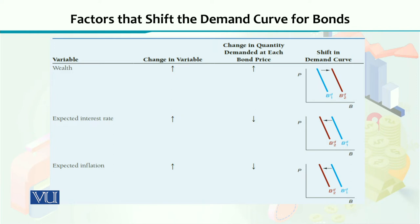Next factor is expected interest rate. Interest rate का price of the bond के साथ inverse relationship है. Expected interest rate अगर increase कर जाता है, तो आपकी जो demand curve है for a bond या for any financial instrument, वो backward shift कर जाएगी. लेकिन अगर आप expect कर रहे हैं कि future में interest rate fall करने वाली है, तो ऐसे situation में आपकी demand curve forward shift करेगी — you will see that there is a rise in the demand for that particular financial asset.